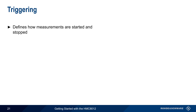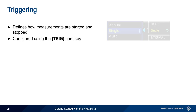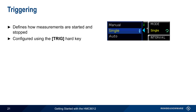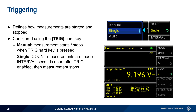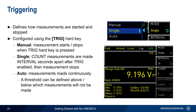Triggering defines how measurements are started and stopped, and the trigger types and parameters are configured using the trigger hard key. There are three trigger modes: manual, single, and auto. In manual mode, measurements are started and stopped by pressing the trigger hard key. In single mode, the user defines a count – the number of measurements to make – and an interval, which is how far apart these measurements are in time. The default mode is auto, in which measurements are made continuously, though this mode allows a threshold to be defined above or below which measurements will not be made.